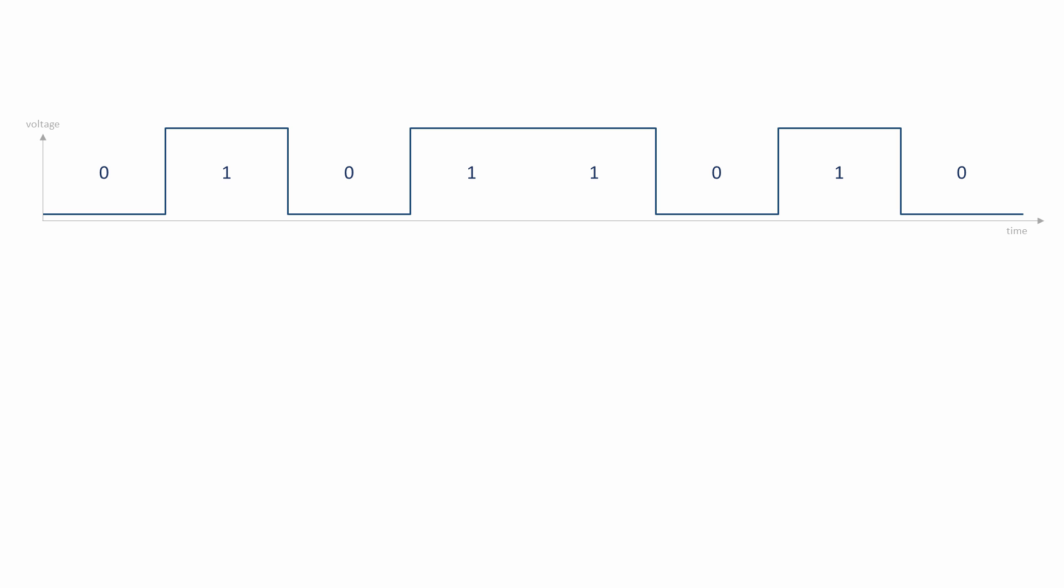Each of these two possible states is known as a symbol, and a stream of symbols is referred to as the baseband signal.